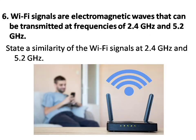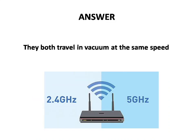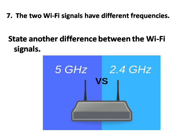Question number six. Wi-Fi signals are electromagnetic waves that can be transmitted at frequencies of 2.4 gigahertz and 5.2 gigahertz. State a similarity of the Wi-Fi signals at 2.4 gigahertz and 5.2 gigahertz. Answer: they both travel in a vacuum at the same speed. Question number seven. The two Wi-Fi signals have different frequencies. State another difference between the Wi-Fi signals. Answer: wavelength.